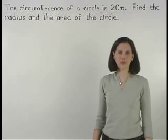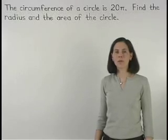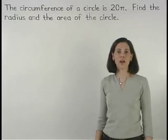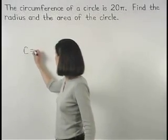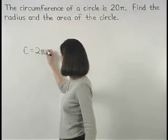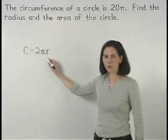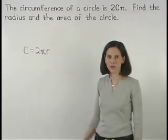To find the radius of the circle, remember that the formula for the circumference of a circle is 2 pi r, where r represents the radius of the circle.